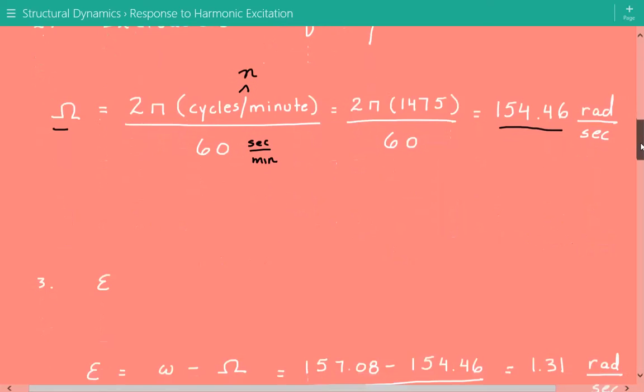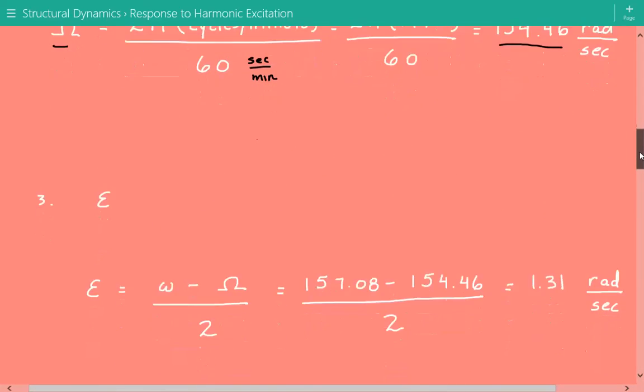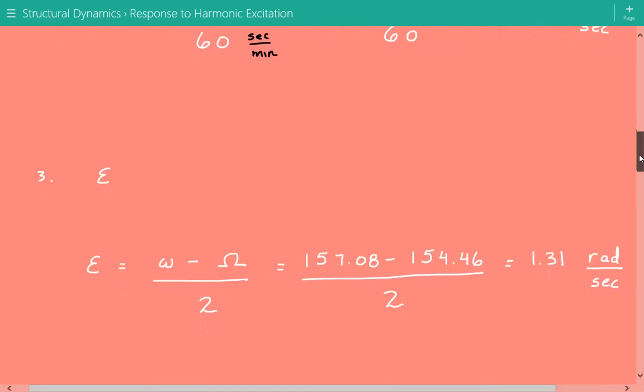After this, we're going to calculate a value called epsilon. And epsilon we define as lowercase omega minus capital omega divided by 2. So the circular natural frequency of the system minus the circular natural frequency of the exciting force divided by 2. And epsilon is 1.31 radians per second.